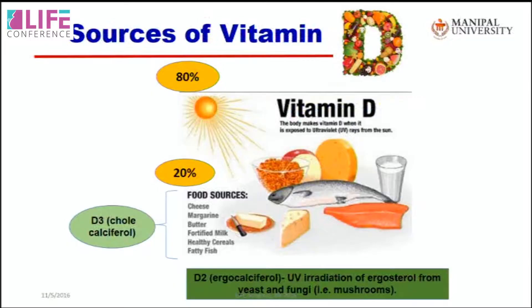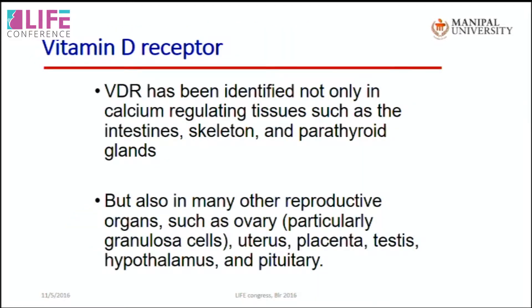About 80% of vitamin D comes from sun exposure, while 20% comes from food. The vitamin D receptor has been identified not only in calcium-regulating tissues such as the intestines, skeleton, and parathyroid gland, but also in many reproductive organs including the ovary — particularly granulosa cells — as well as the uterus, placenta, testis, hypothalamus, and pituitary.